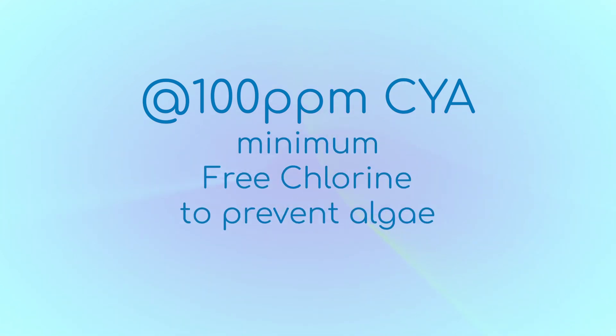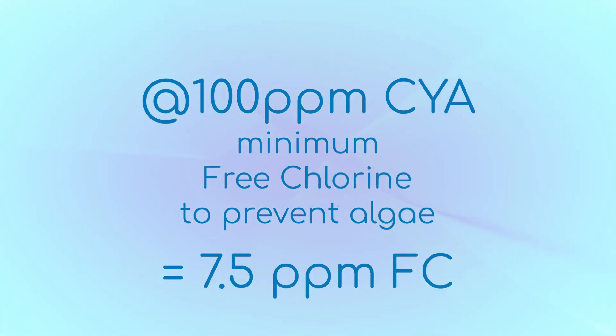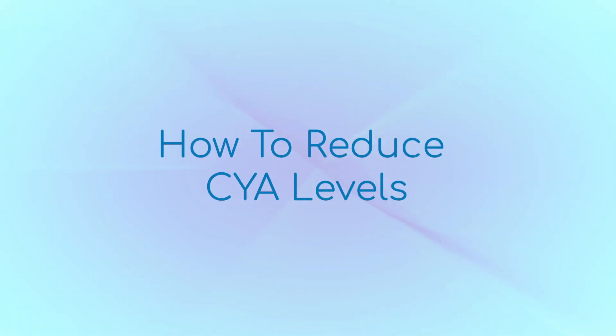So, if you have 100 parts per million CYA — which is not uncommon at all — your new minimum free chlorine to prevent algae is 7.5 parts per million. With phosphate levels below 500, it could be closer to 4 parts per million. If your pool is already overstabilized, you should try to correct it. There are a few products that claim to remove CYA from water with mixed results.